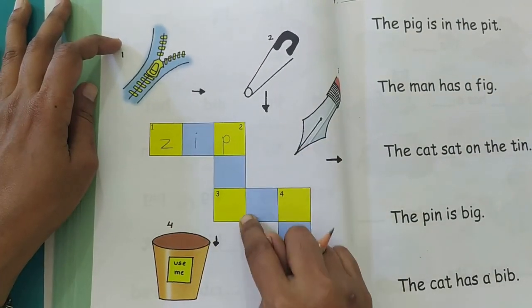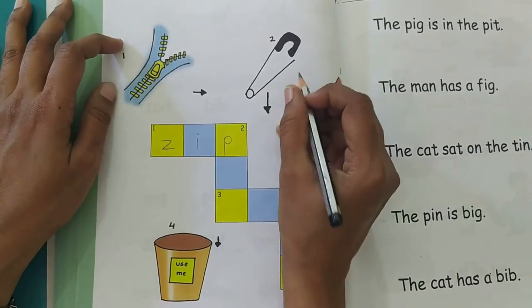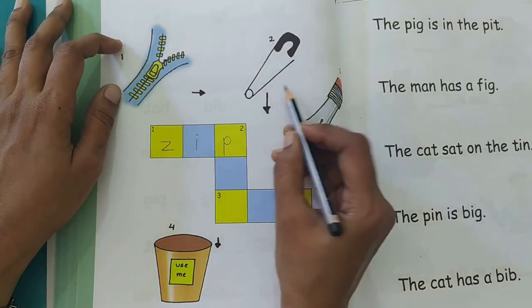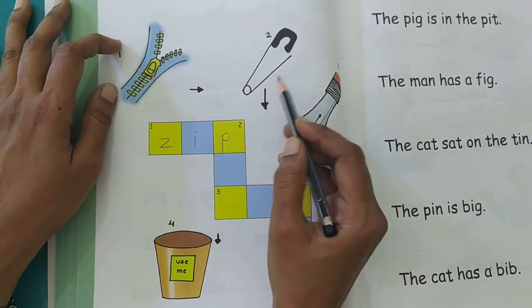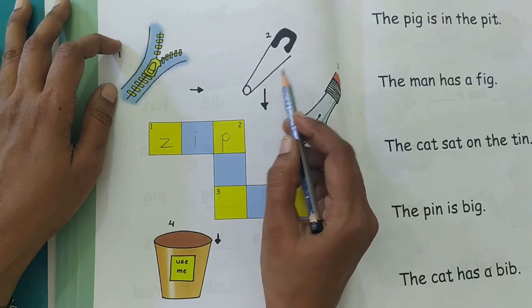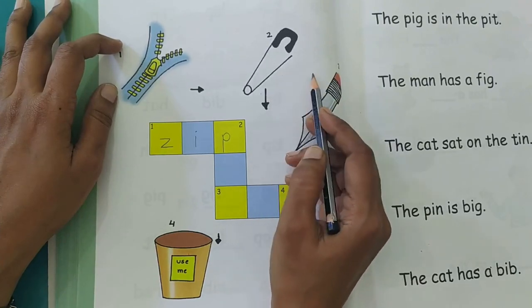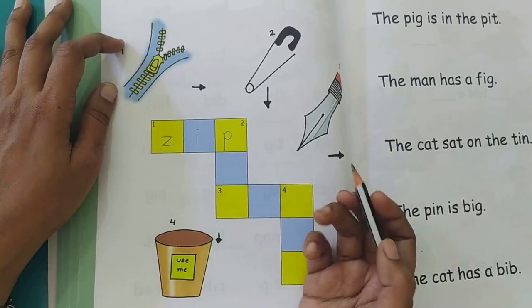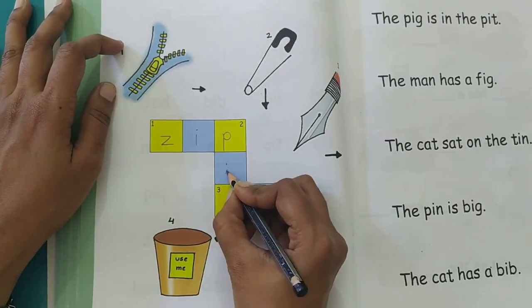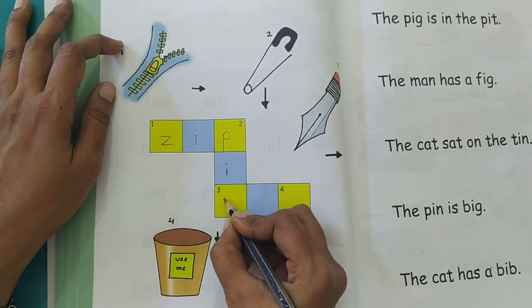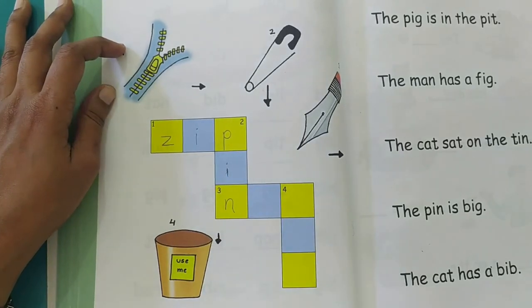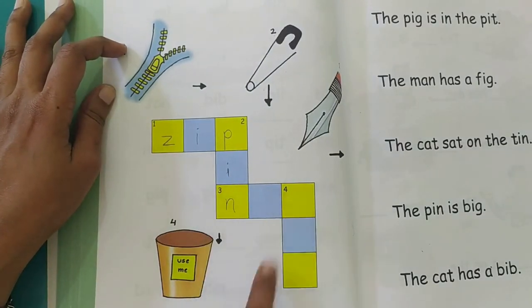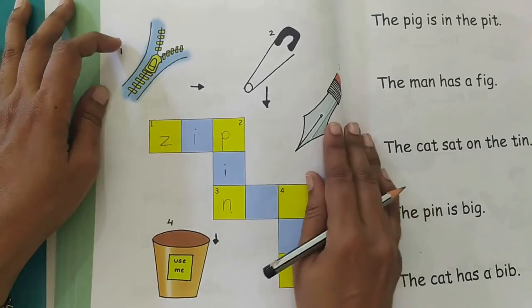Now let's look at what are the pictures. This is the picture of a zip. Now for the next column that is starting with two, what is the picture clue for two? What is this picture? PIN. How do you spell PIN? And you have to write it downwards. So PIN is already written.